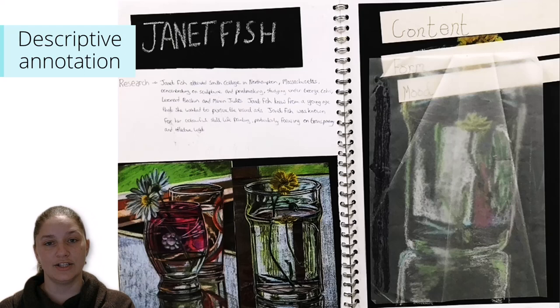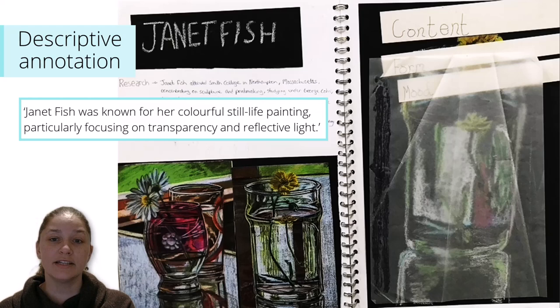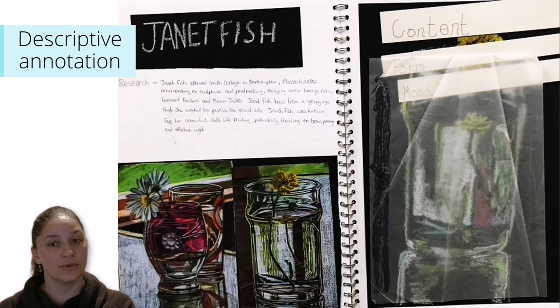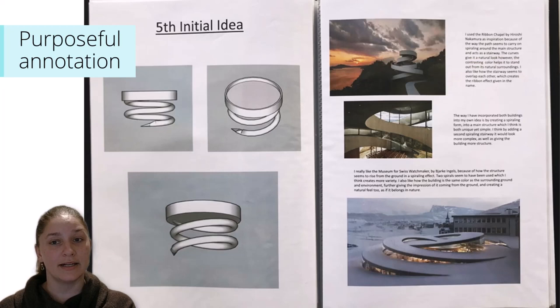This is an example of a candidate producing a small amount of descriptive annotation. The work of American artist Janet Fish is referenced and annotated in a descriptive way. The annotation states: Janet Fish was known for her colourful still life painting, particularly focusing on transparency and reflective light. This candidate describes the visual characteristics of Janet Fish's work, but there is a lack of critical analysis or ability to reflect on their own work in response to this investigation.